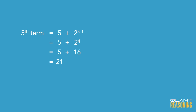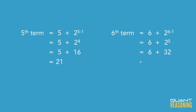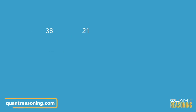The sixth term is 6 plus 2 to the power of 5, so that's 6 plus 32, which is 38. Now we know it's 21 and 38, and the difference would be 17.